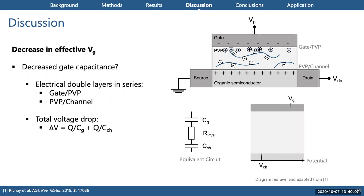Because these are in series, the voltage between the gate and the channel needs to drop across both capacitors. This is important because the effective gate voltage depends on the voltage drop between the PVP layer and the channel, not necessarily the gate and the channel. Let's illustrate this effect with a potential diagram. We're illustrating potential along the x-axis and the layers of the device along the y-axis. The gate and channel will both be fixed at their respective applied voltages.